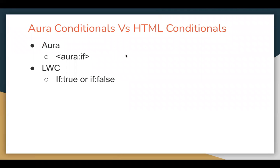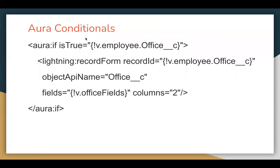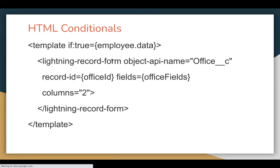Next is Aura conditional versus LWC HTML conditional. In Aura, if you want to apply a condition you write aura:if with isTrue equals to an attribute; the true part executes, and through aura:set you can define the false part. In LWC you use template with if:true equals to a property for the true part, and if:false for the false part.